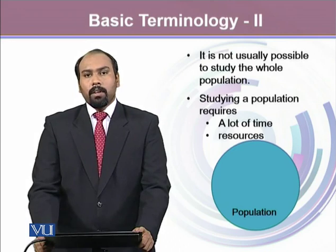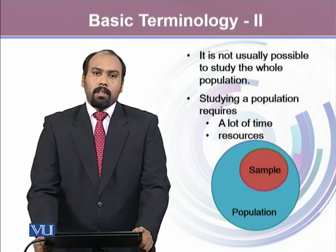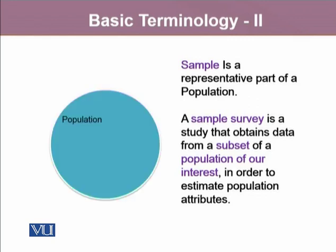Therefore, we rely on samples. Samples are the true representative part of our population. Whenever we study a sample, we call such studies a sample survey, where samples are the subsets of our population. Our population is too large, and therefore there are possibilities of taking multiple samples out of it.